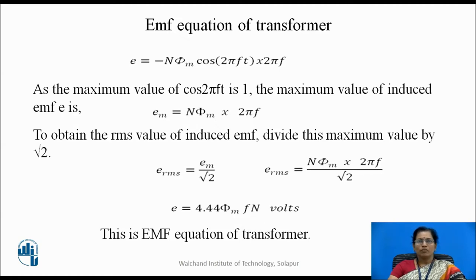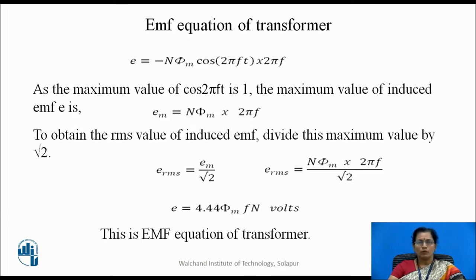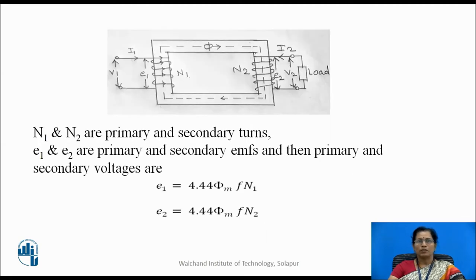So, E_RMS = N φ_M · 2πf / √2. After calculating 2π/√2, we get the value 4.44. So, E_RMS = 4.44 f φ_M N volts. This is the EMF equation of transformer.